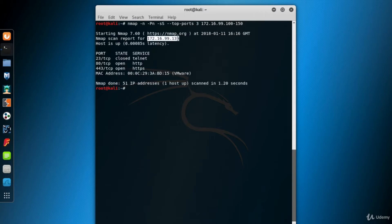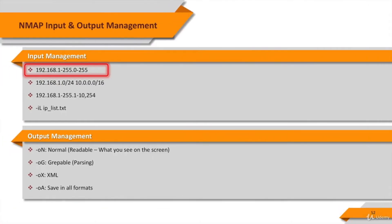There's only one machine between 172.16.99.100 and 172.16.99.150. You can also scan more than one IP block in a single query. The example in the slide scans two ranges: the first between 192.168.1.0 and 192.168.1.255, and the second between 10.0.0.0 and 10.0.255.255.